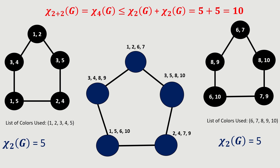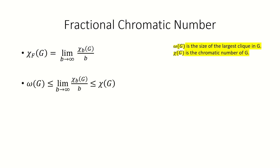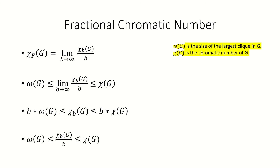We are now ready to define the fractional chromatic number of a graph. The fractional chromatic number of a graph, chi sub f of g, is defined as the limit as b goes to infinity of the b-fold chromatic number of a graph divided by b. By the sub-additivity lemma, this limit exists. We also know that the limit must be between the clique number and the chromatic number of the graph. This comes from the inequality we proved for b-fold colorings earlier, which we can manipulate by dividing by b to yield this inequality for the fractional chromatic number of a graph.